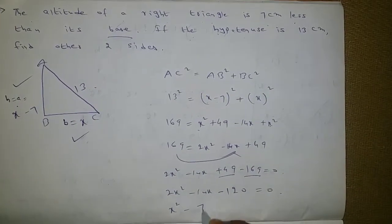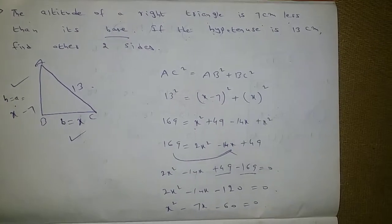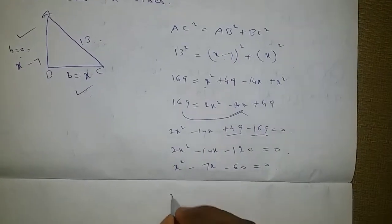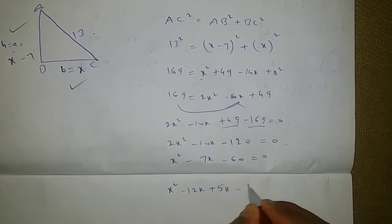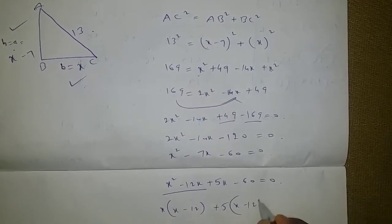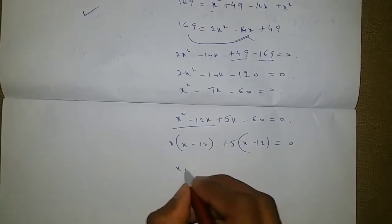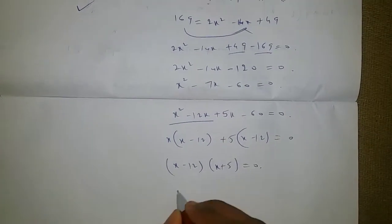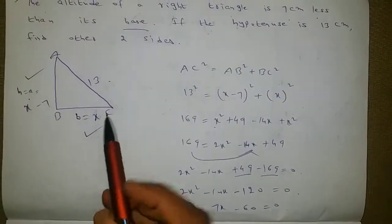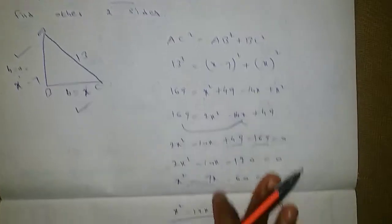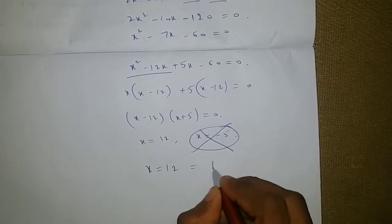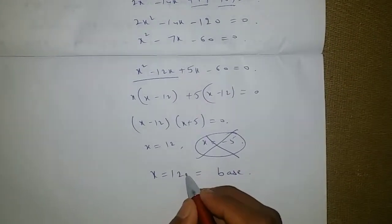Dividing all terms by 2: x squared minus 7x minus 60 equals 0. Splitting the middle term: x squared minus 12x plus 5x minus 60 equals 0. Taking x common gives x minus 12, and taking 5 common gives x minus 12. So x minus 12 into x plus 5 equals 0, giving x equals 12 or minus 5. Since measurements cannot be negative, x equals 12, so the base is 12 centimeters.